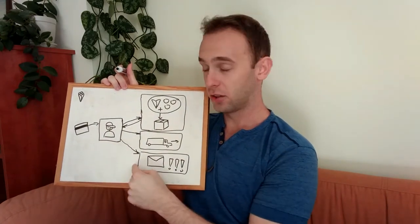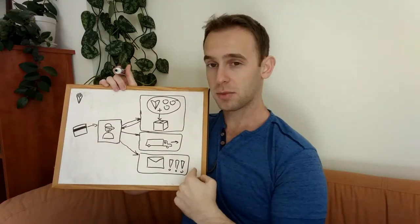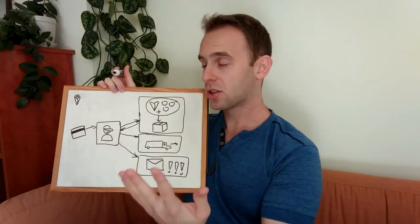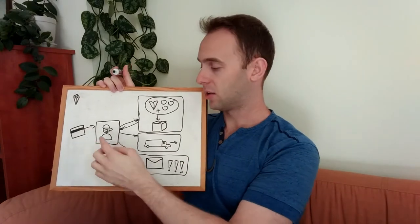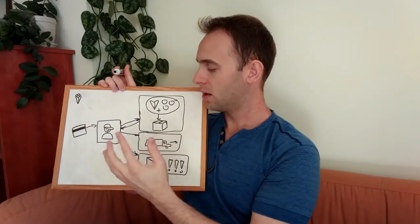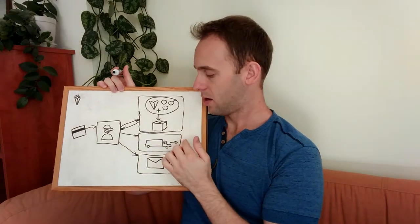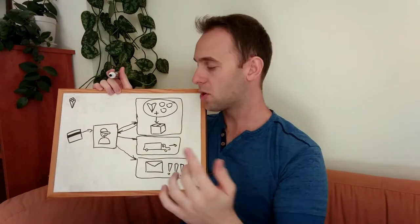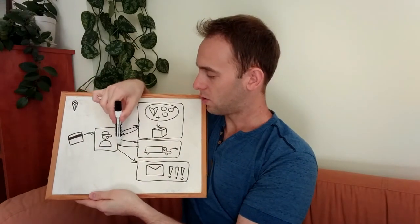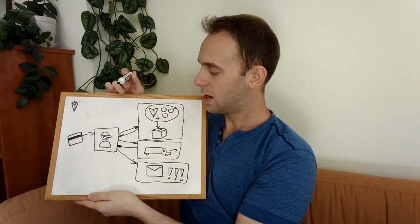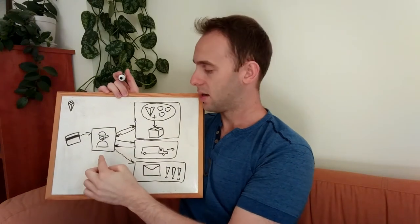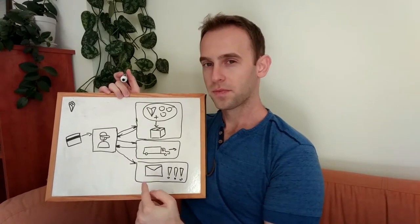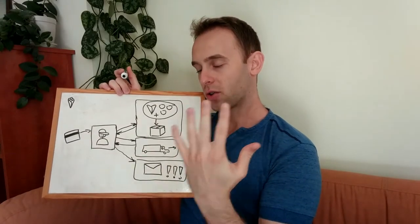For example, when he receives the order, he sends a notification that the order has been received. When the order is packaged, he sends a notification that the order is packaged and now being delivered. When the delivery service delivers the package to the customer, it returns a notification to the ordering manager saying the order is finished, and the ordering manager then notifies the user.